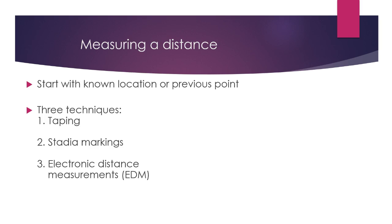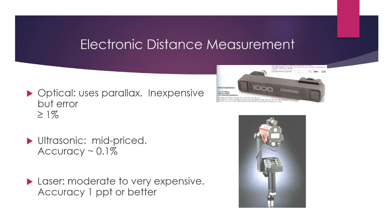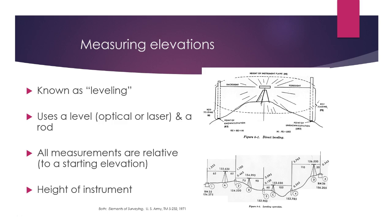When measuring distances you typically start with a known location or benchmark. You can use a tape - similar to a measuring tape from the hardware store - or electronic distance measurement, which is a capability on the total station. Electronic distance measuring devices are similar to a range finder used by hunters or golfers. They range from inexpensive with some error to very expensive with remarkable accuracy.